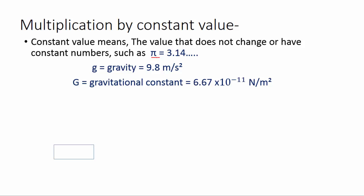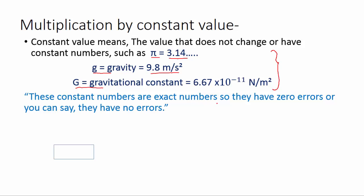Like pi, gravity g, and gravitational constant G. You can see all these constants have an exact number, like 3.14 or 9.8 meter per second square. So these values do not change. So these constant numbers are exact numbers, so they have zero errors or you can say no errors.